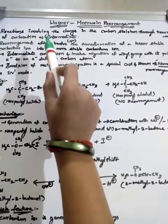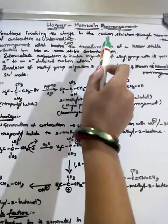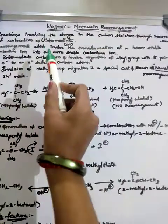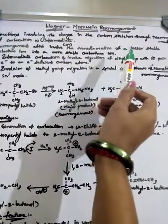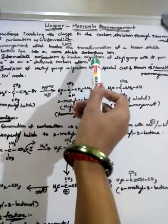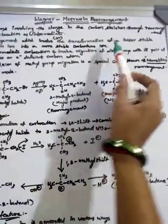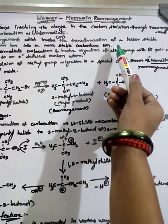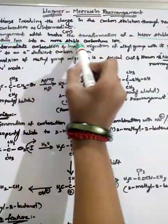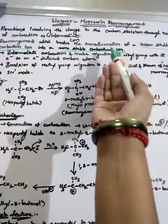In reactions in which carbocation acts as an intermediate, changes take place in the carbon skeleton. The definition of Wagner-Meerwein rearrangement is: the rearrangement in which the transformation of a lesser stable carbonium ion to a more stable carbocation takes place. This is analogous to the pinacol-pinacolone rearrangement, in which also a lesser stable carbocation transfers to a more stable one.